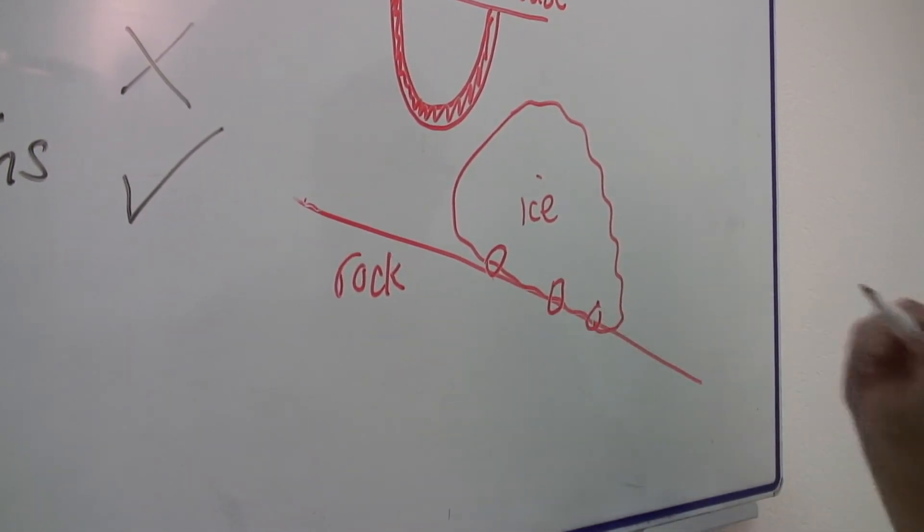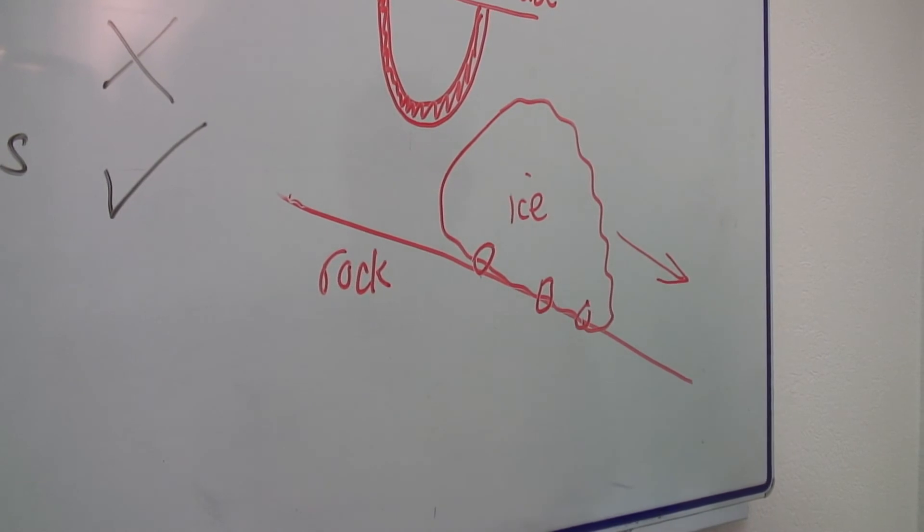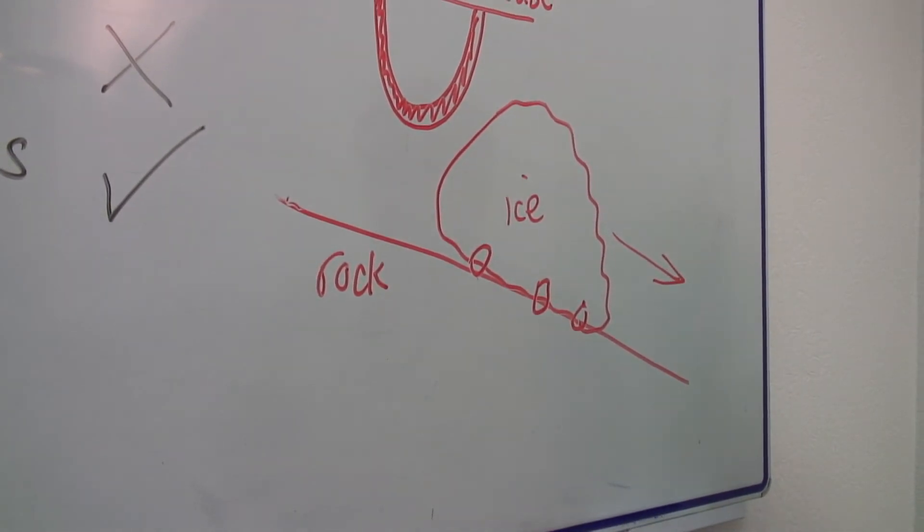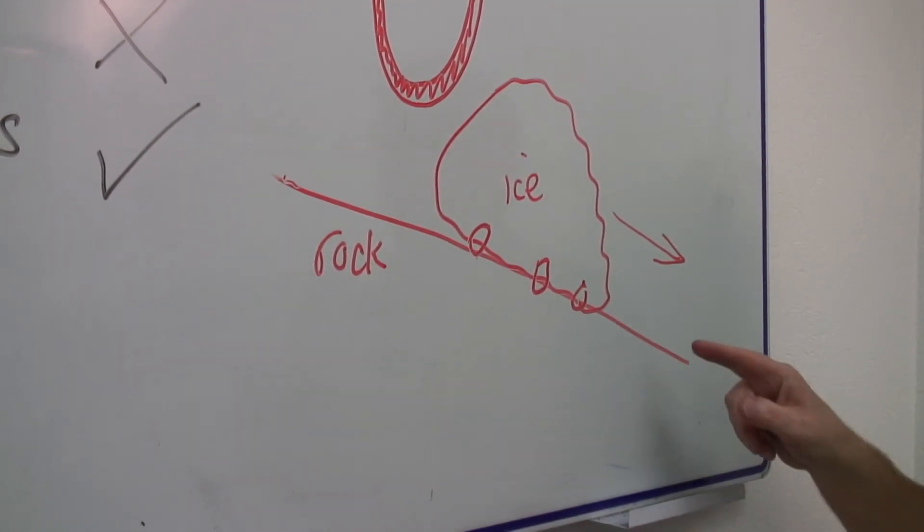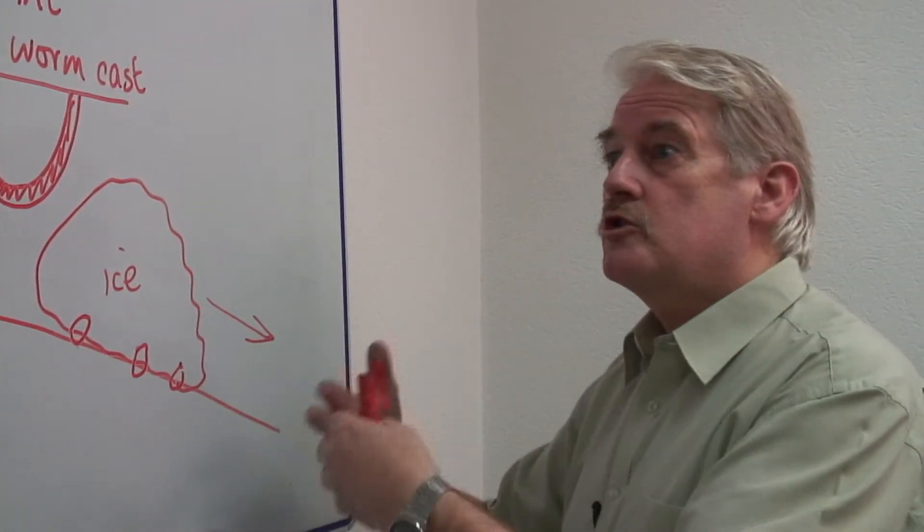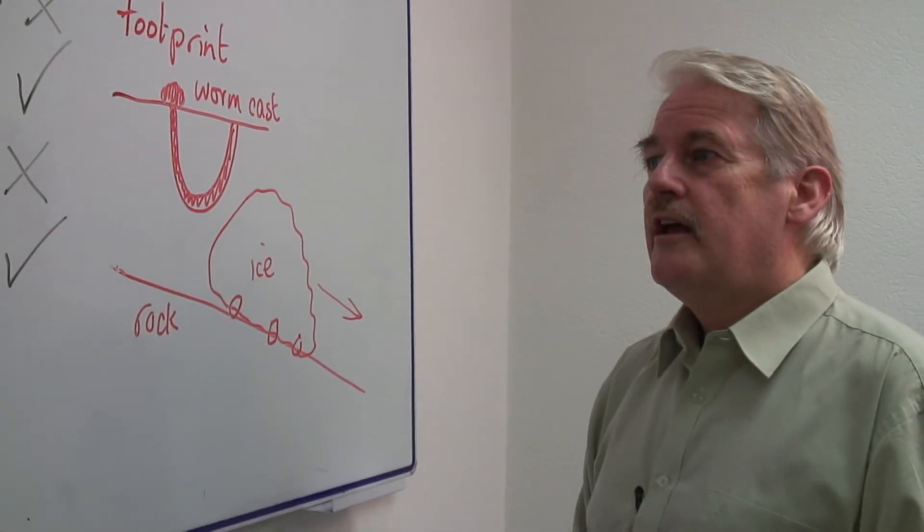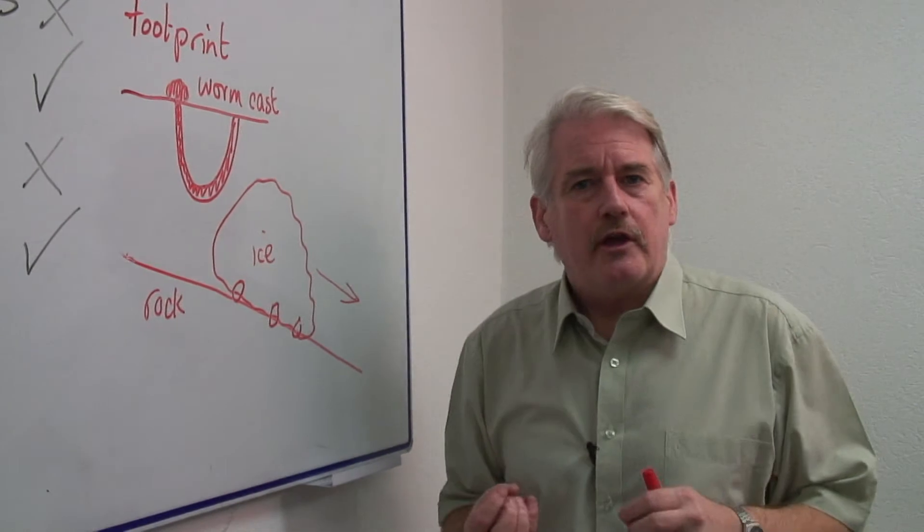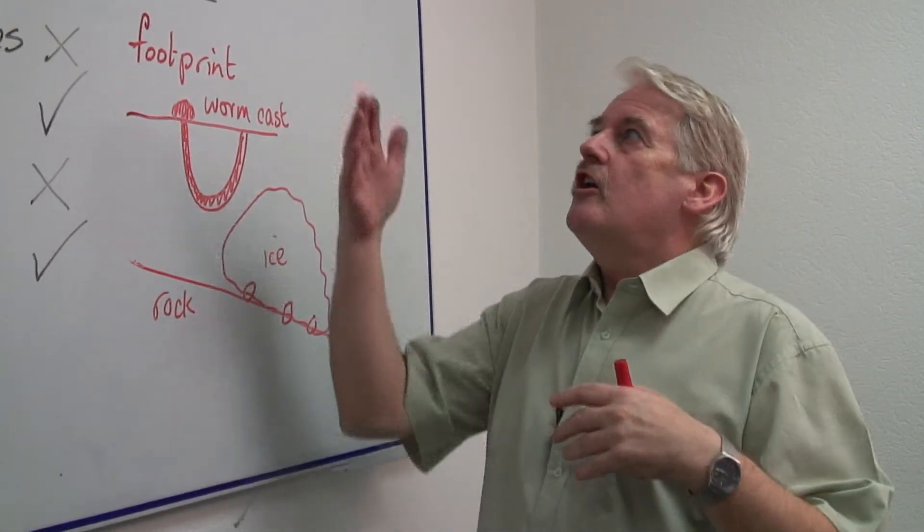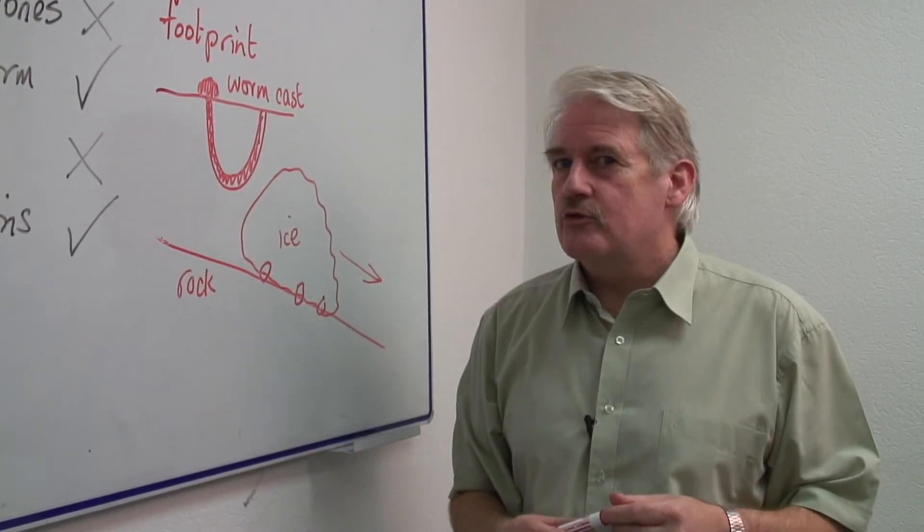And looking at those grooves, we can tell which direction the ice was moving. So we know that this rock was covered with ice and the ice was moving in a certain direction. This tells us quite a lot about what the conditions were like. So this isn't a physical thing. This is a trace. So this is why trace fossils are really useful.